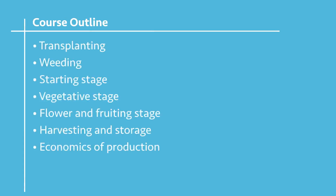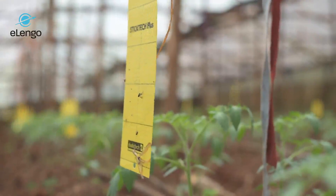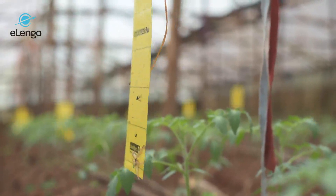And then transplanting — how do you transplant these seedlings? How do you do the weeding when weeds are there? You can see here, already some weeds are developing. How do you do the weeding? Then, once you plant, we go to the starting stage — how to control the pests and diseases and the nutrition aspect in the starting stage.